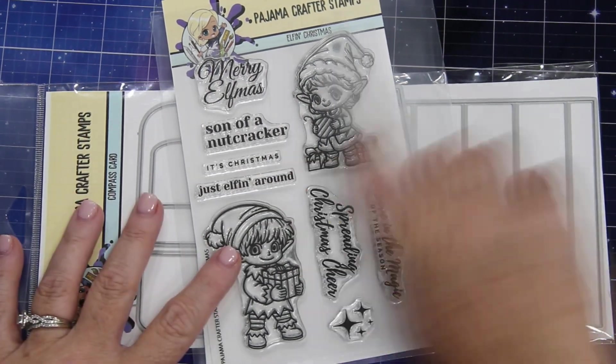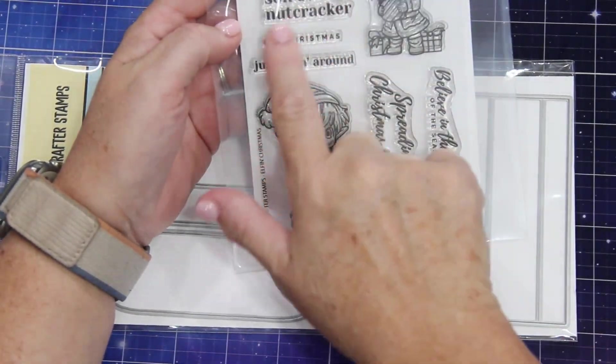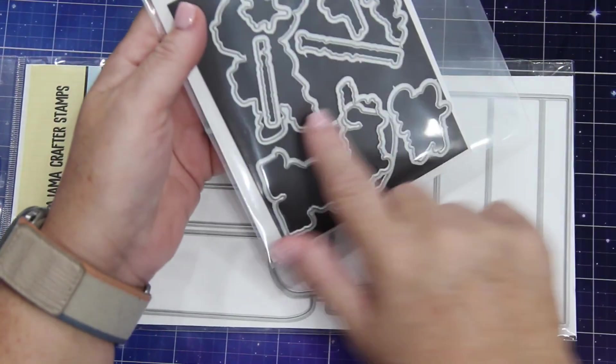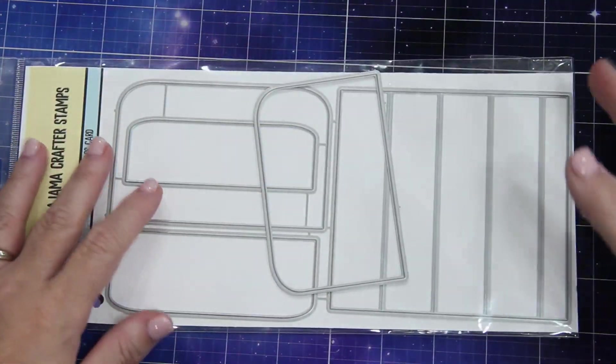So I am going to be using the Elfin Around stamp set, which I have already colored previously. And then I'm going to introduce you to an awesome die. It's called the Compass Card Die.